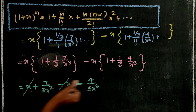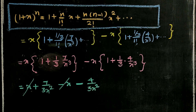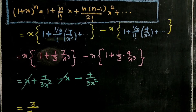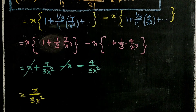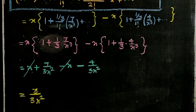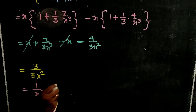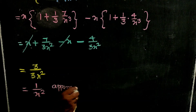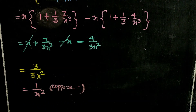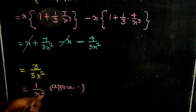The x³ terms cancel. We are left with (1/3) · (7 − 4) / x², and since 7 − 4 = 3, this gives 3/(3 · x²), which cancels to 1/x². The answer is approximately 1/x².